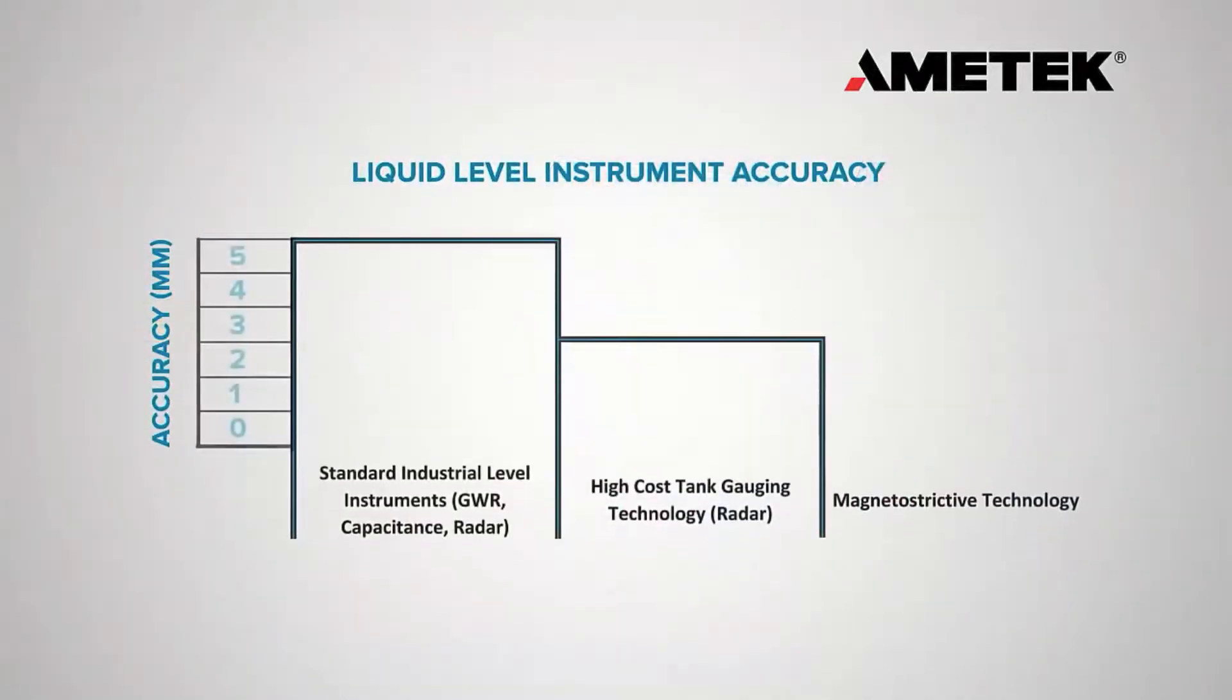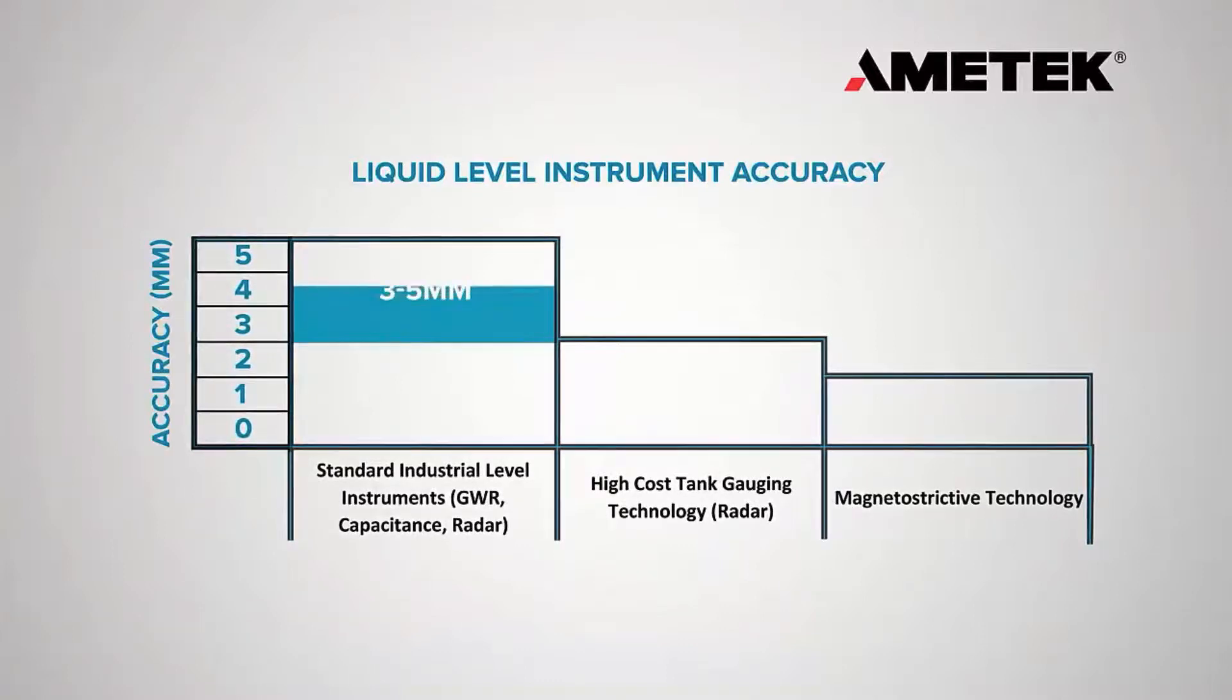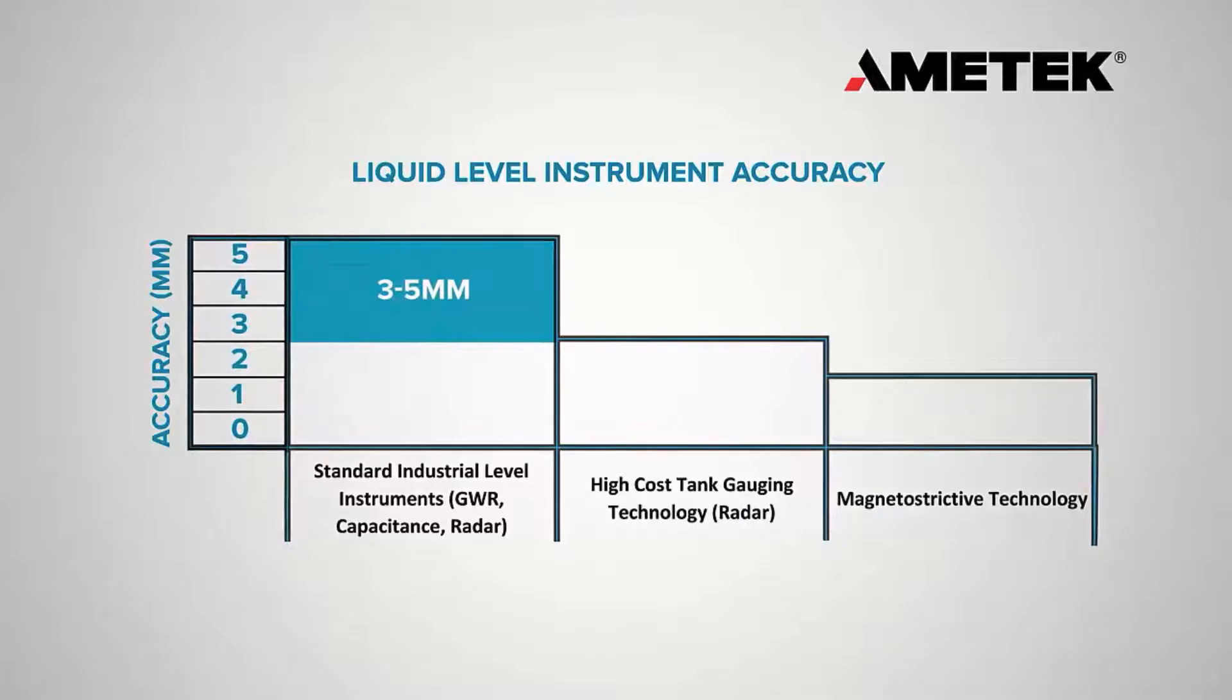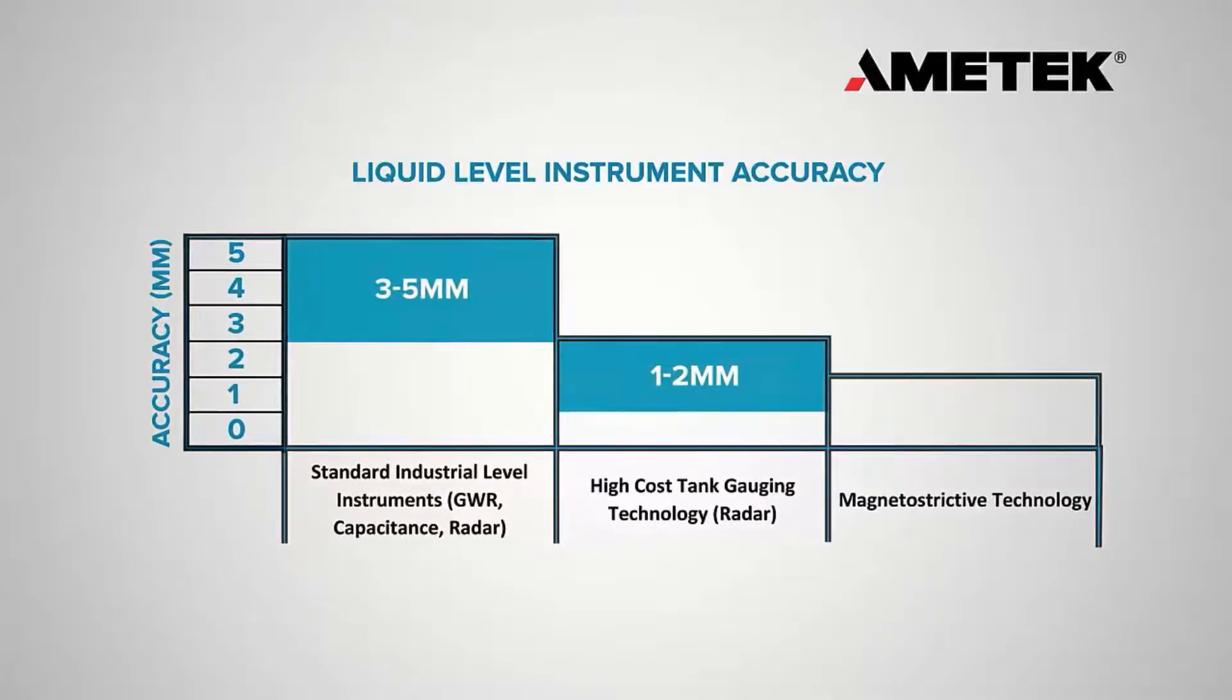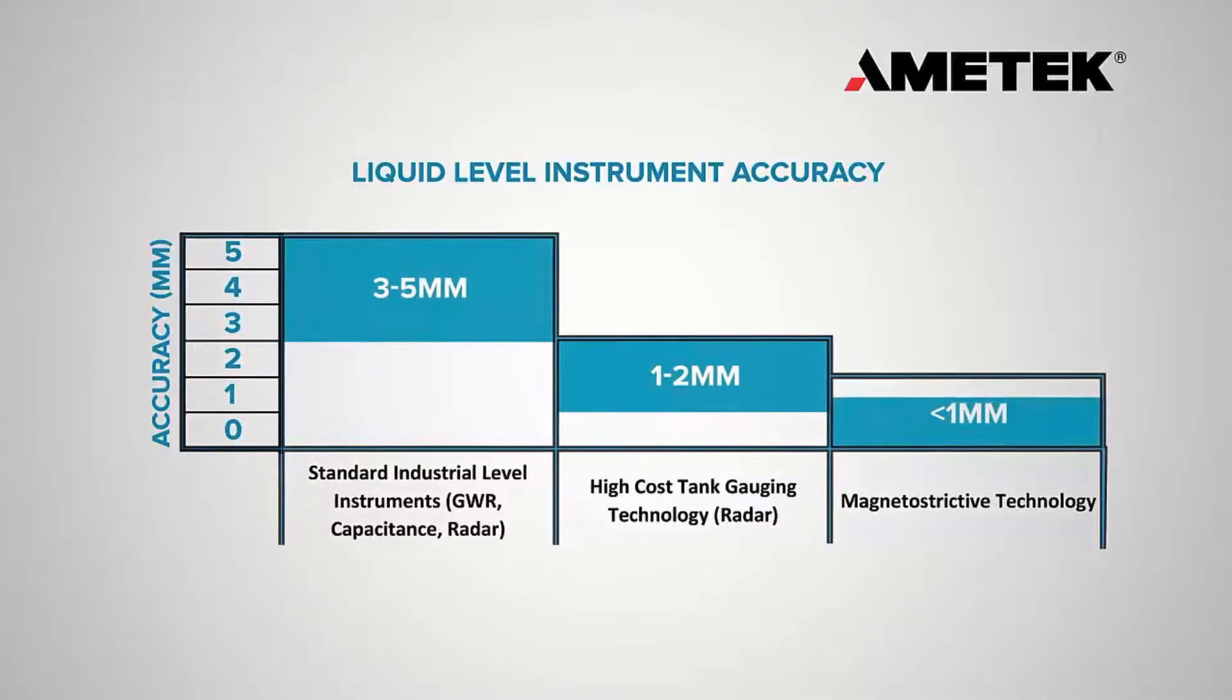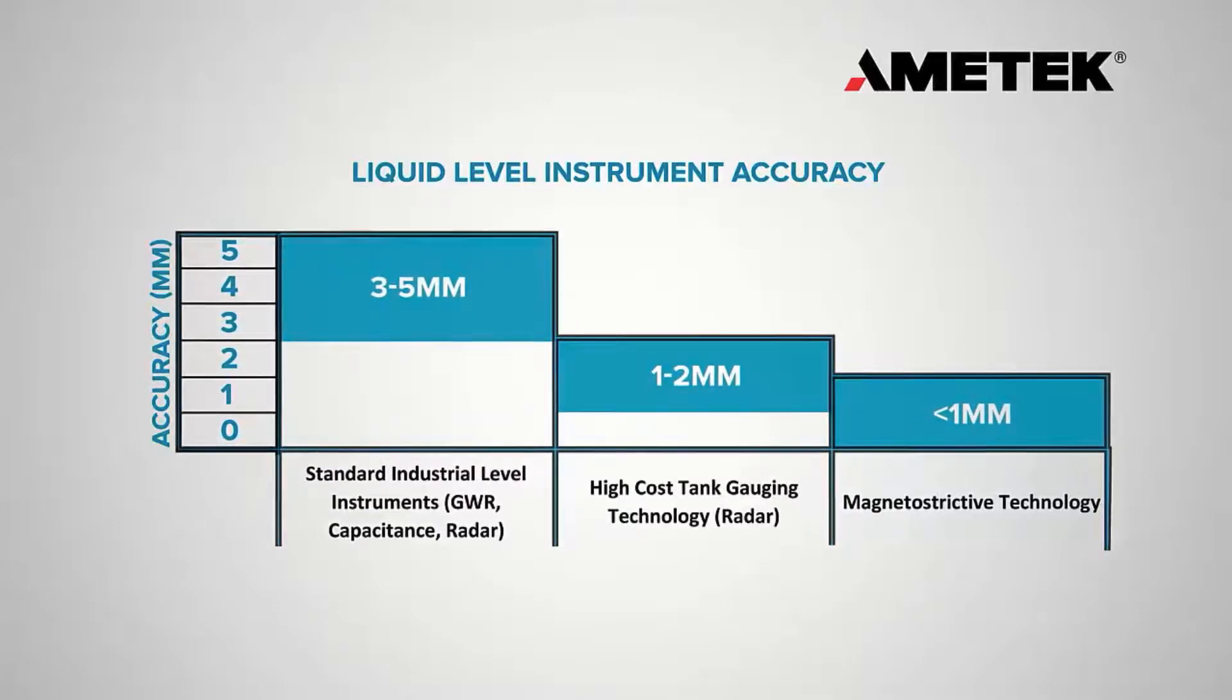Standard industrial level instruments utilizing guided wave, capacitive, or radar technologies provide 3 to 5 millimeter accuracy. Higher cost tank gauging technologies will provide 1 to 2 millimeter accuracy. Only magnetostrictive technology can provide superior sub-1 millimeter accuracy levels consistently under most process conditions.